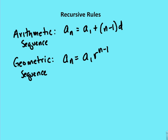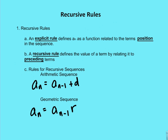A recursive rule works a little bit differently. A recursive rule defines the value of a term by relating it to the preceding terms. So that means in order to find a sub 8, you need to know a sub 7. In order to find a sub 7, you need to find out what a sub 6 is. If you want to find out what a sub 6 is, you need to know what a sub 5 is, and so on and so forth.